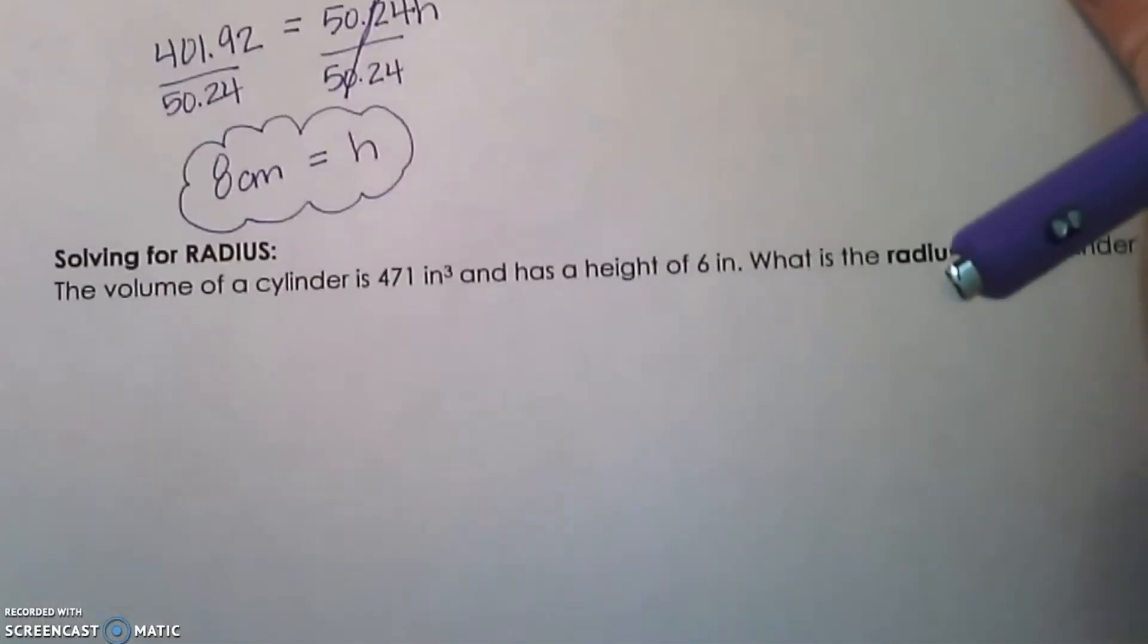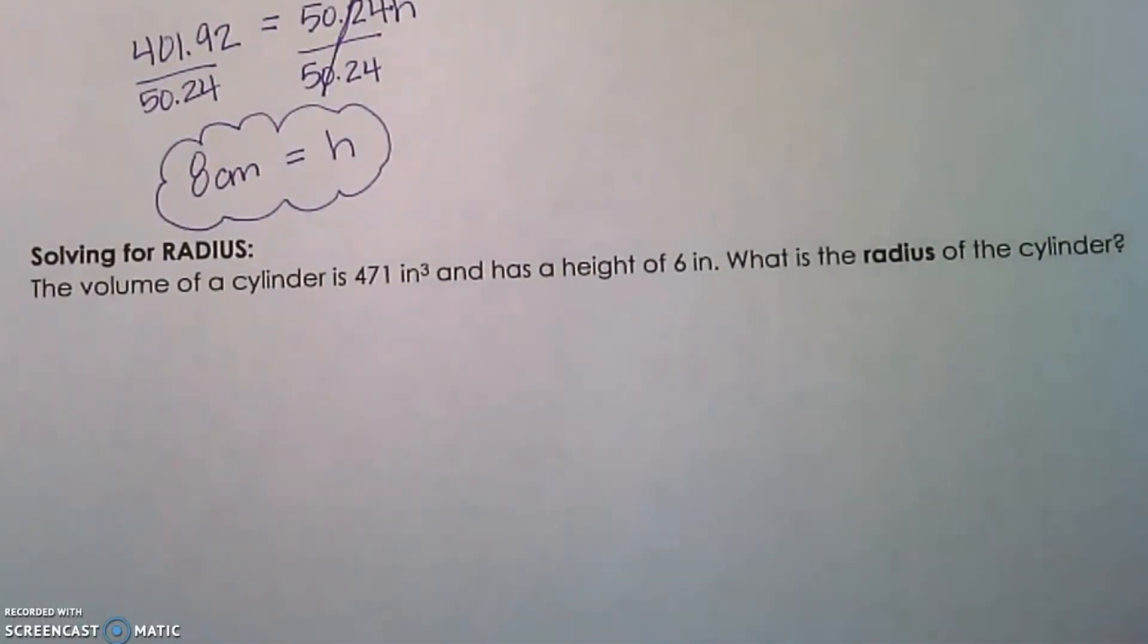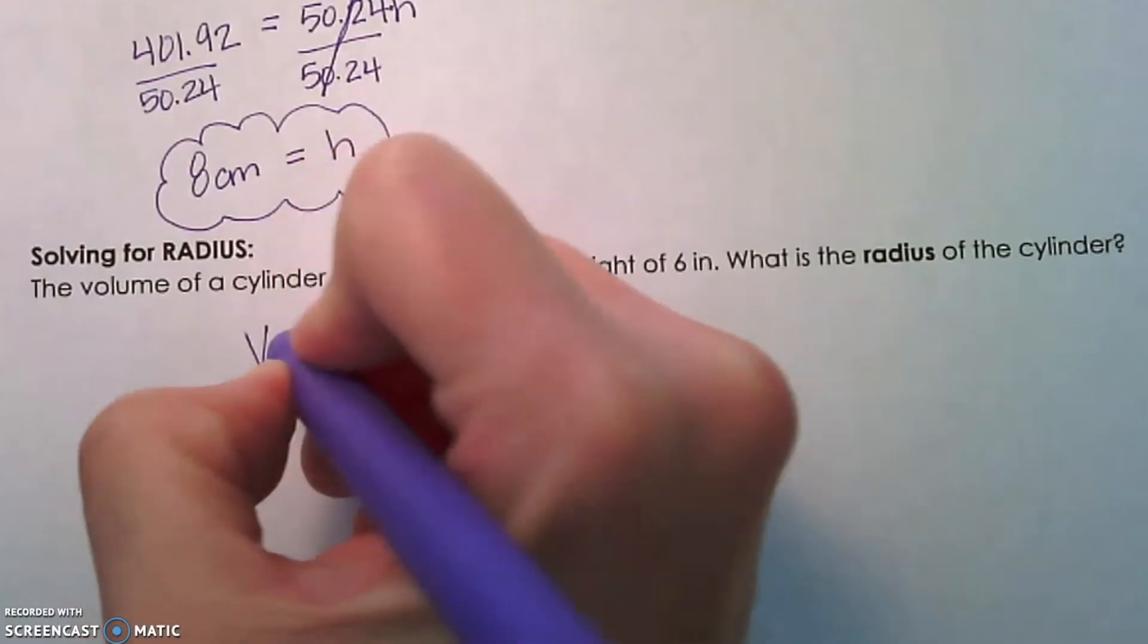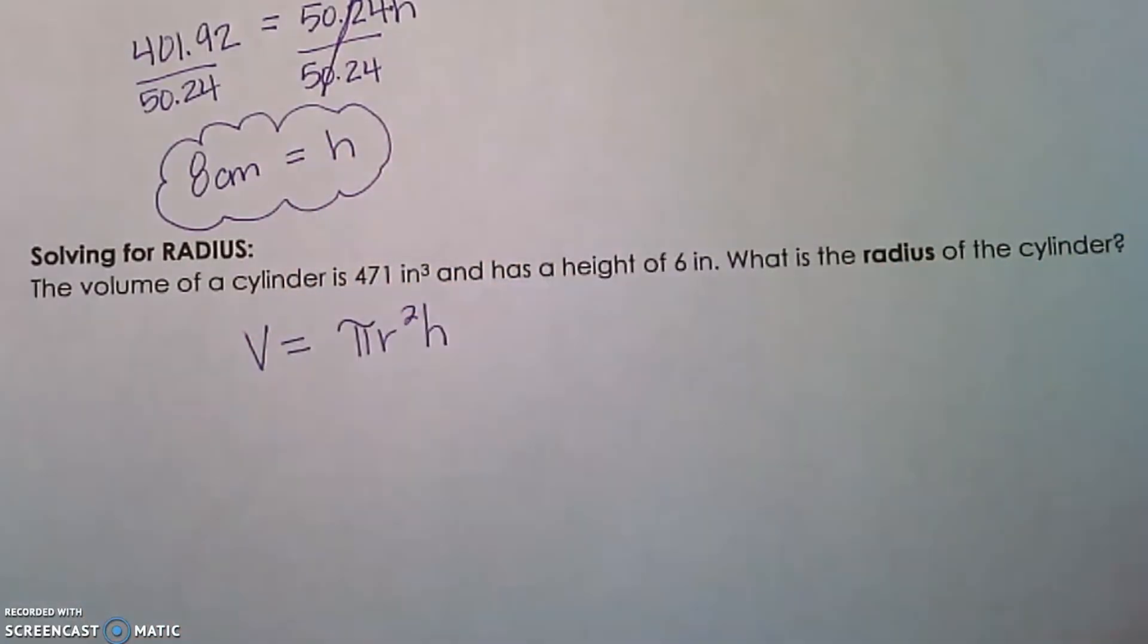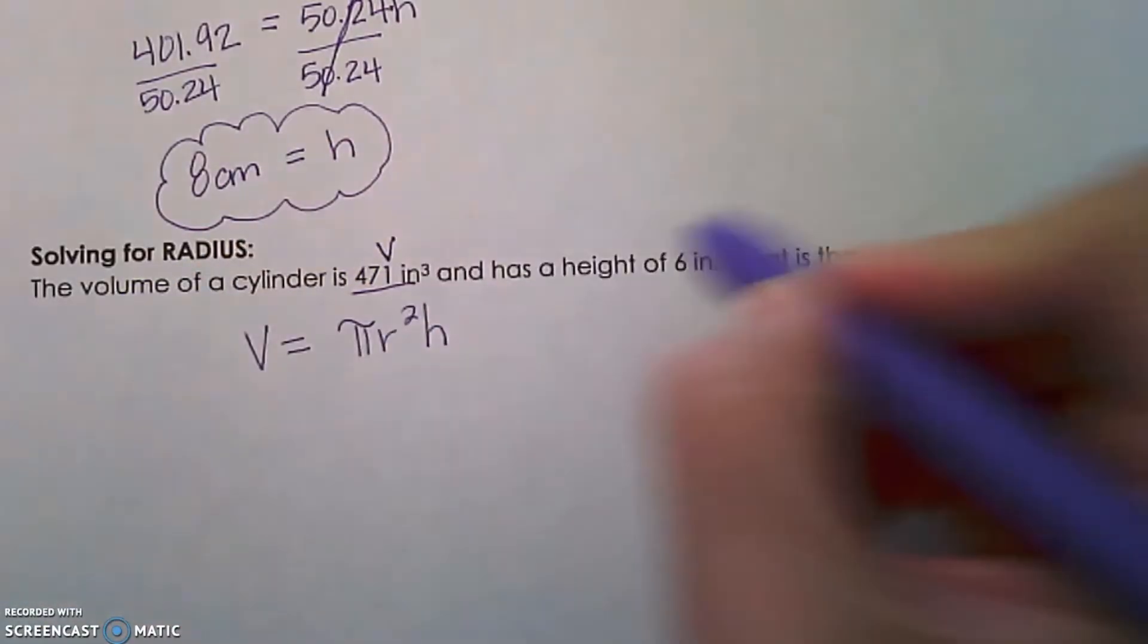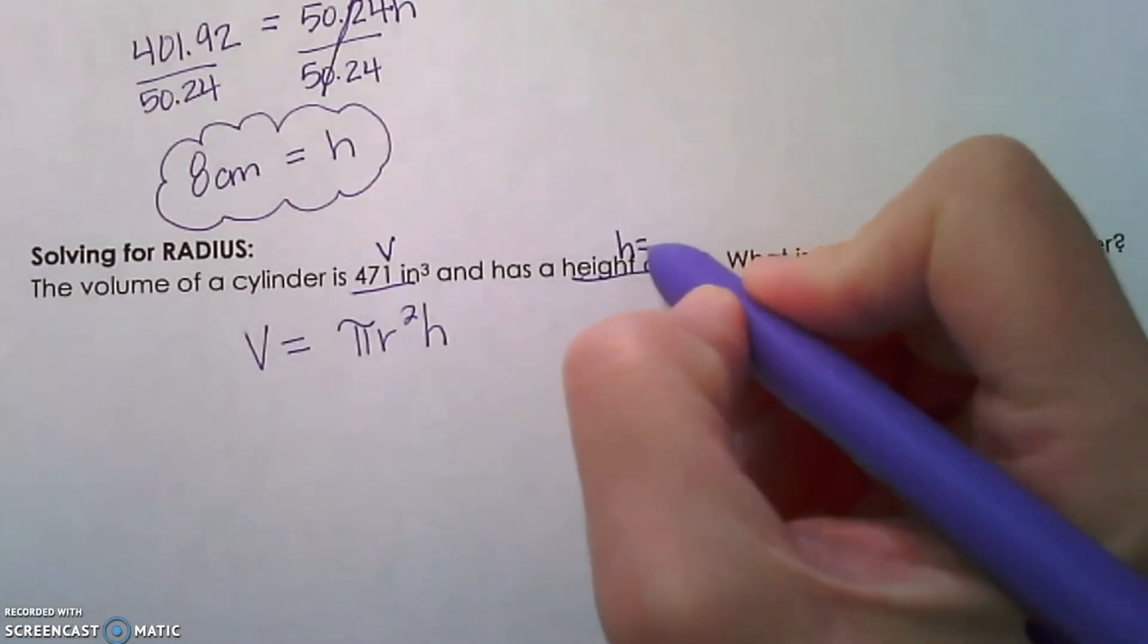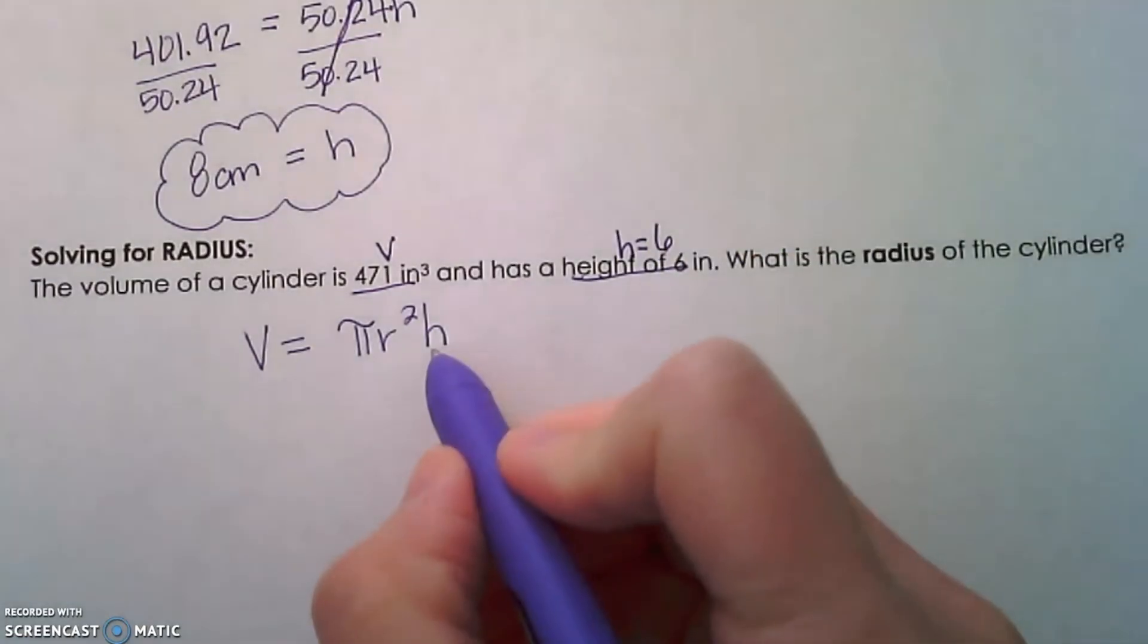Next, we're going to solve for radius. If we are given the volume of 471 cubic inches and a height of 6 inches, what is the radius? Same process. We're going to write down our formula, V = πr²h. Now we're going to substitute. We know the volume is 471 and we know height is 6, so we don't have to do anything to that number. That's exactly what we need.